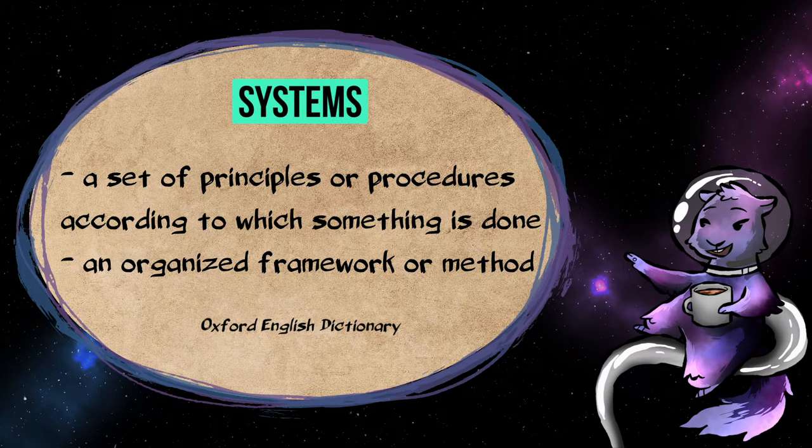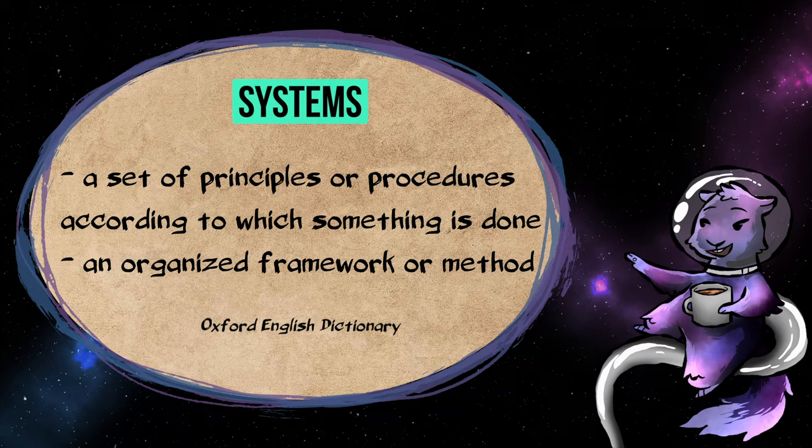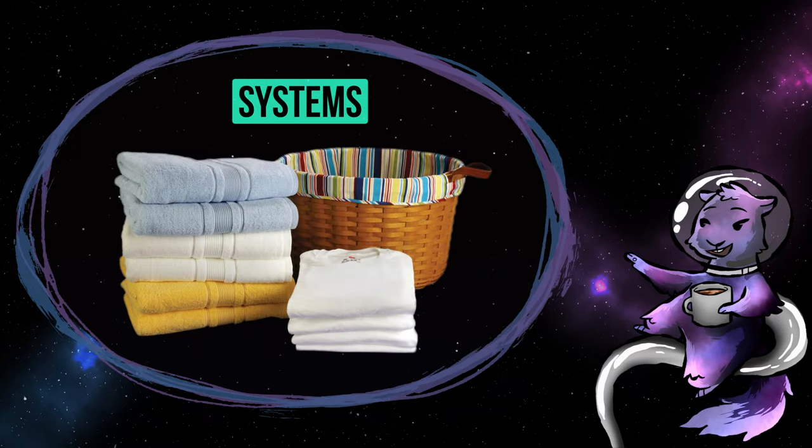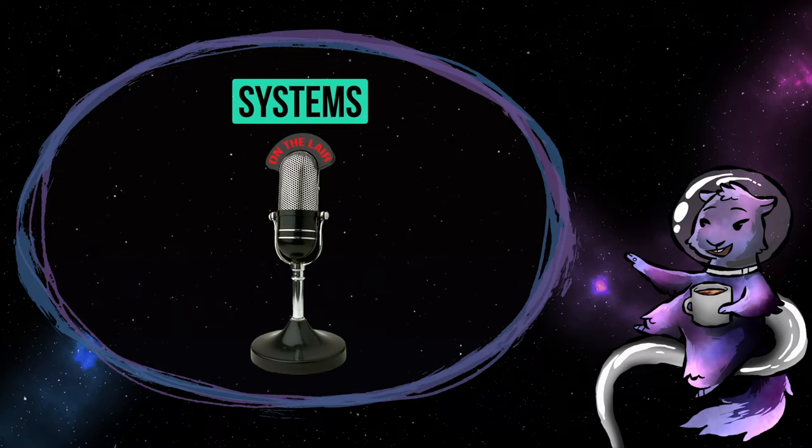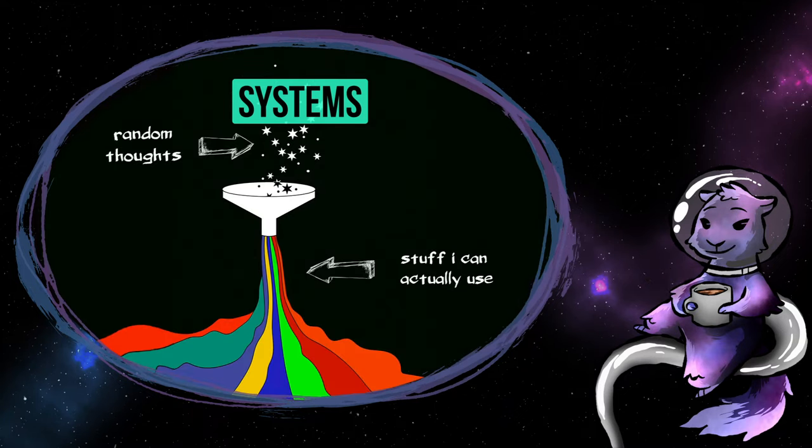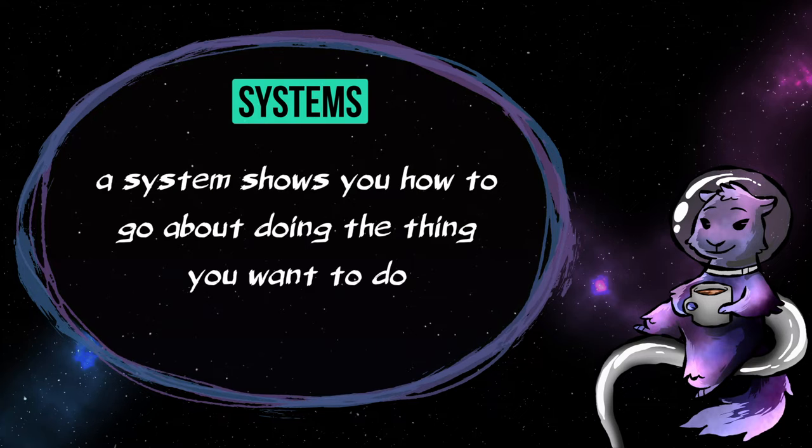A system is a set of principles or procedures according to which something is done. I fold my clothes as I take them out of the dryer. That's my system for actually finishing my laundry. As a GM, I record my sessions and listen to them as I prep the next one. That's my system for remembering things that happened. I like to think of it as a sort of structure or framework that I funnel my thoughts through to arrive at a desired outcome.